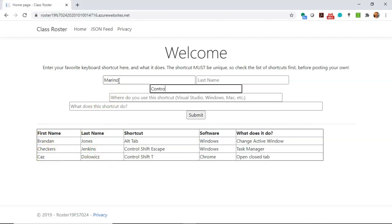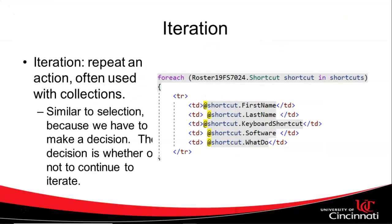We'll say control F4, Chrome, close tab. And you see, once again, it's going to treat that like it treats all the others because it's using iteration to iterate over or shake hands with each one of these items and then print out first name, last name, keyboard shortcut and what it does in this table that we see here. So that's iteration.